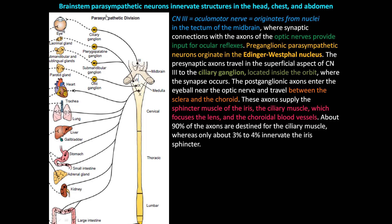The brainstem parasympathetic neurons innervate structures in the head, chest, and abdomen — that is the cranial portion of the parasympathetic nervous system. Cranial nerve number three, number seven, number nine, and number ten innervate the majority of the head, chest, and abdomen structures. The sacral portion of the parasympathetic innervates the lower portion, and we'll talk about each one.